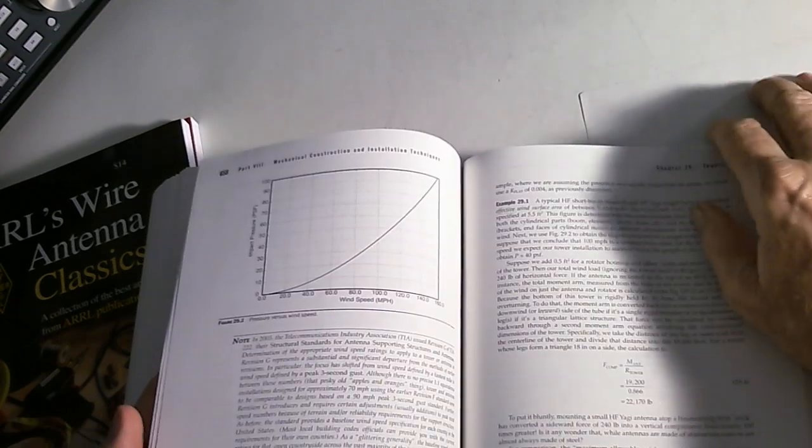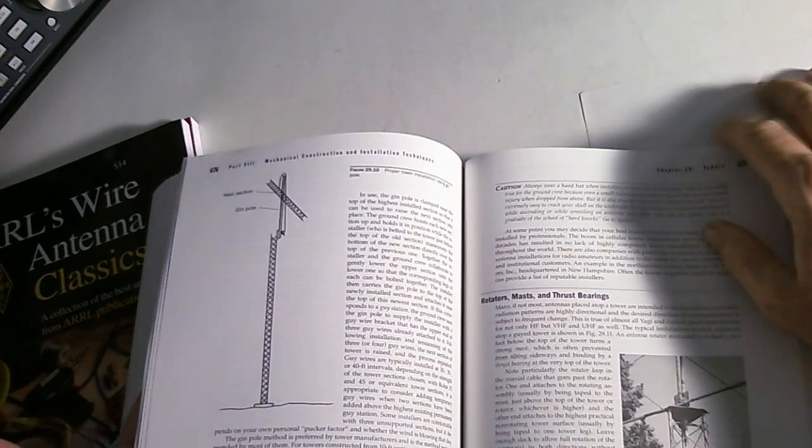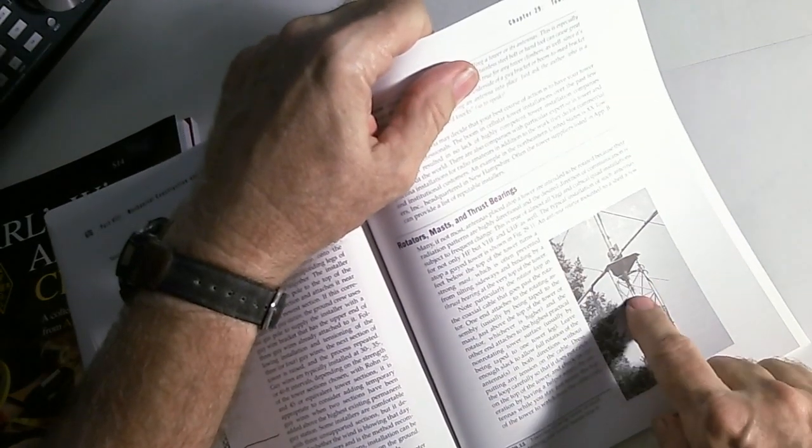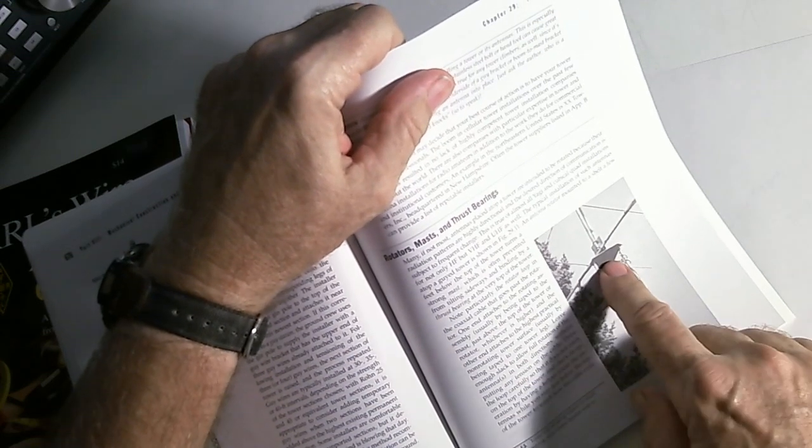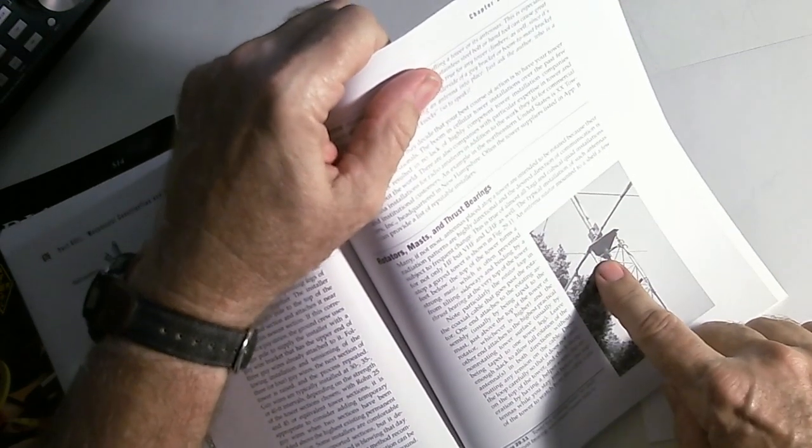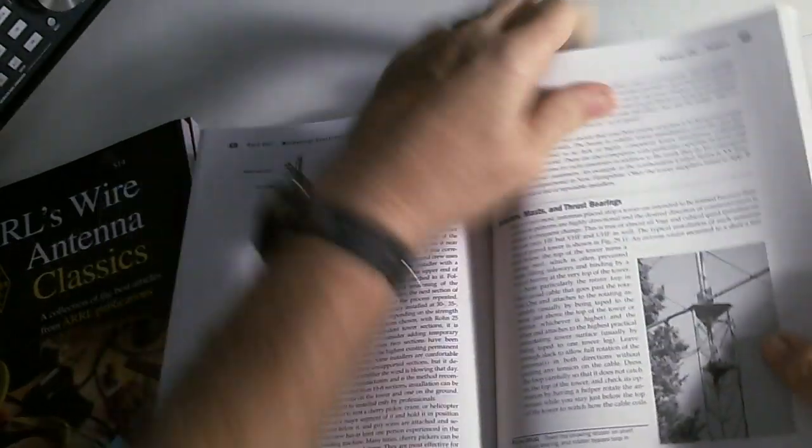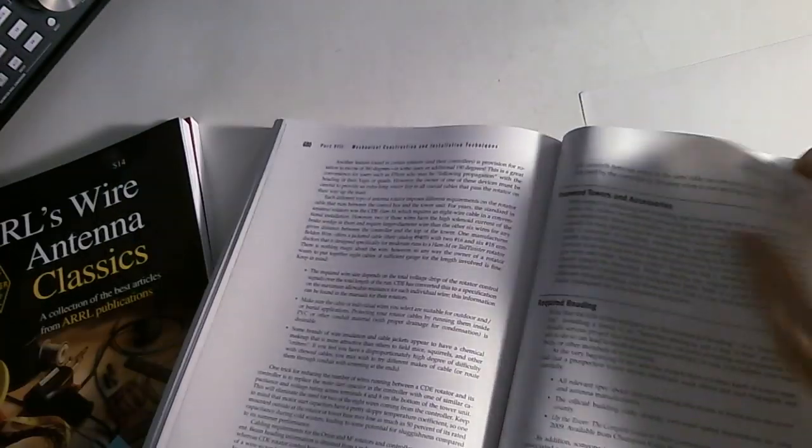How to mount things, how to set up towers, here's some stuff about towers. Here's showing a tower, a mast and a thrust bearing so that you can rotate the antenna.